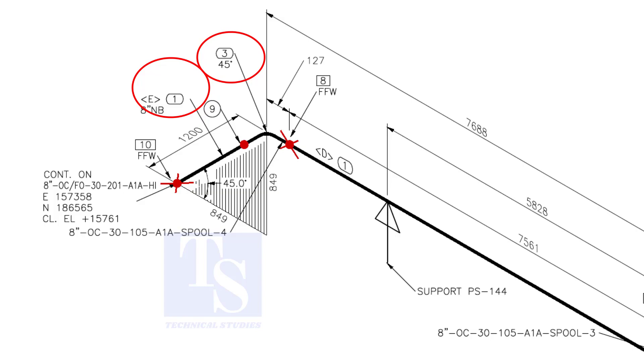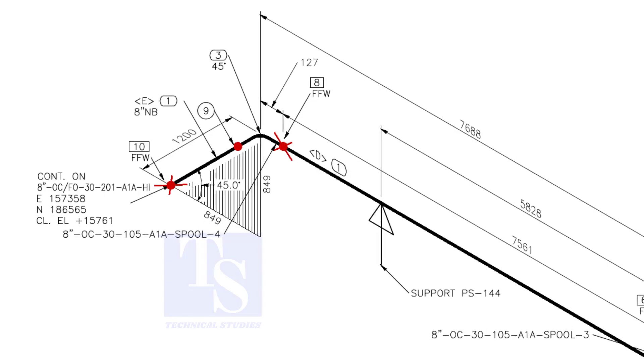We know item number 1 is 8-inch pipe and item number 3 is a 45-degree elbow. Let us confirm in the material list.